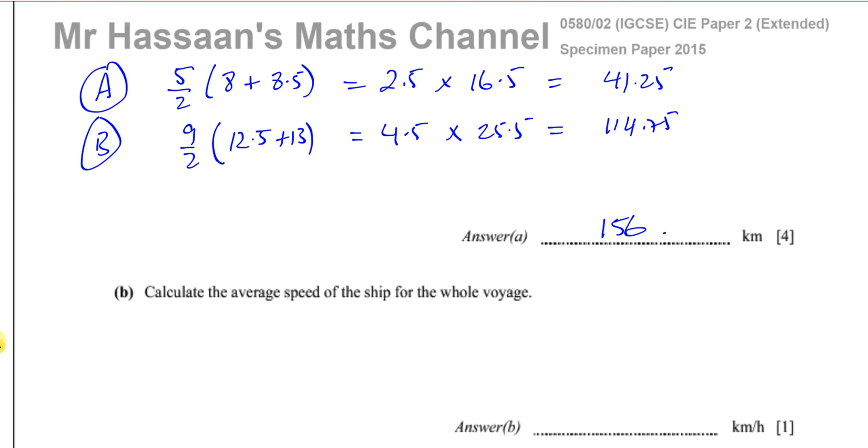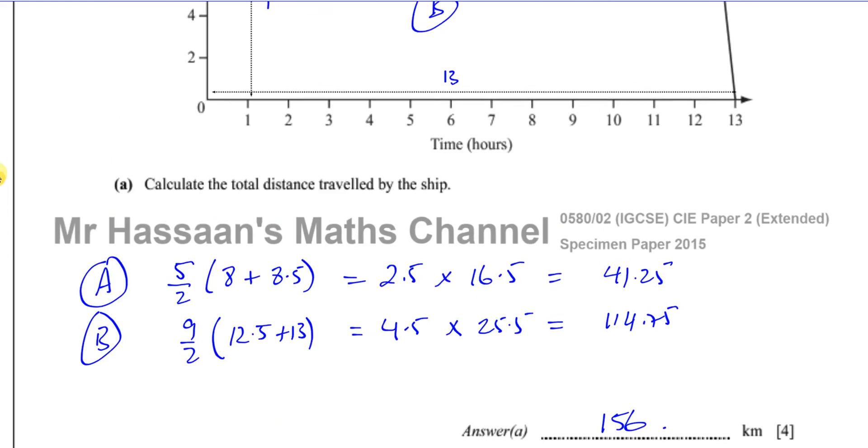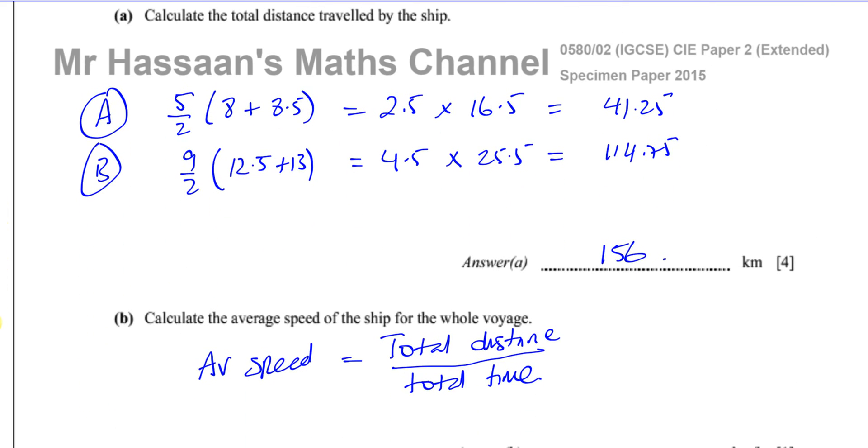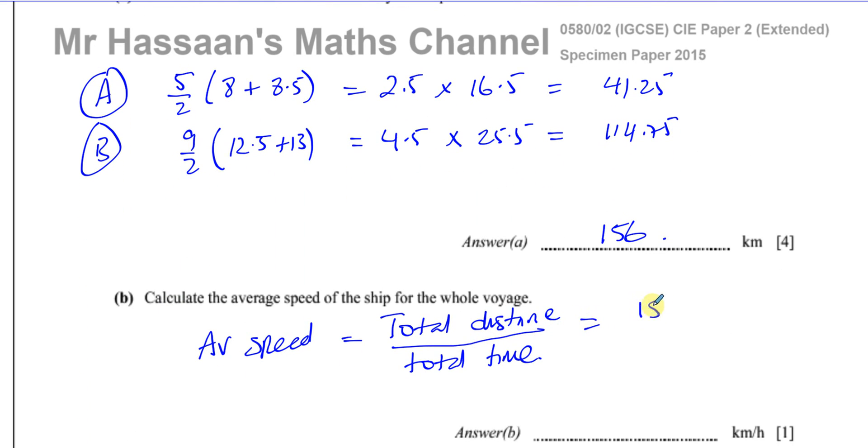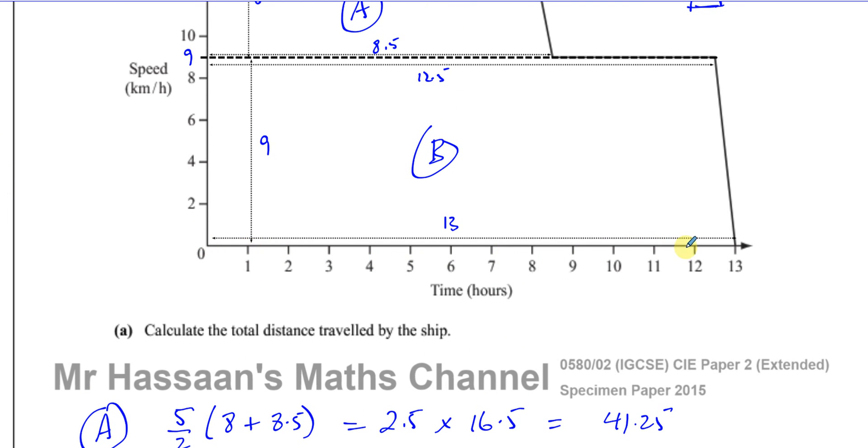Part B says calculate the average speed of the ship. Now, the average speed is the total distance it's traveled over the total time it took. Of course, its speed is not the same all the way through. It changes. It's going this speed and it's slowing down, going another speed and slowing down. So to find the average speed, we take the total distance, which we already found, which is 156, and we divide it by the total time it took, which was these 13 hours.